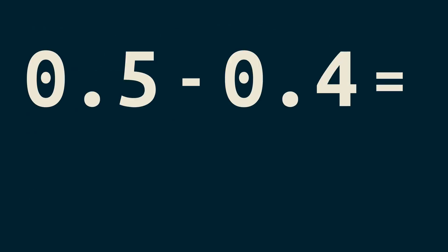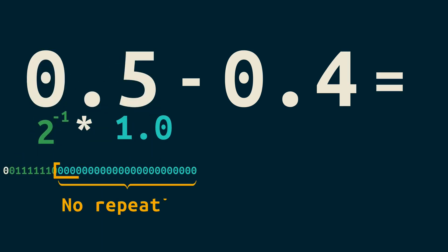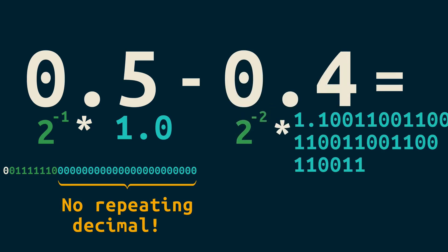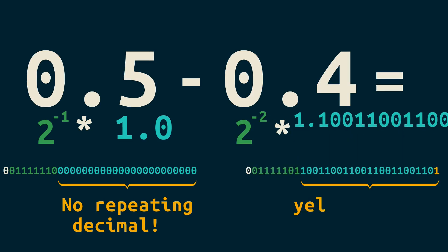Let's go back to the problem we started with. When we do this math, the 0.5 is no problem — it's a power of 2, so no repeating decimal. But the 0.4 goes on forever, so we use an approximation.